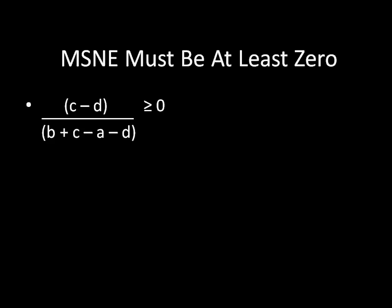So first, the mixed strategy must be at least 0, it can't be negative. For a fraction to be greater than 0, the numerator and denominator must both be positive or they must both be negative. If one is negative and the other is positive, then the overall fraction is going to be negative, and thus our mixed strategy will be invalid. If you recall from the premise that C is greater than D, and therefore the numerator has to be positive because the numerator is C minus D. So for this fraction to be greater than 0, the denominator must be greater than 0 as well.